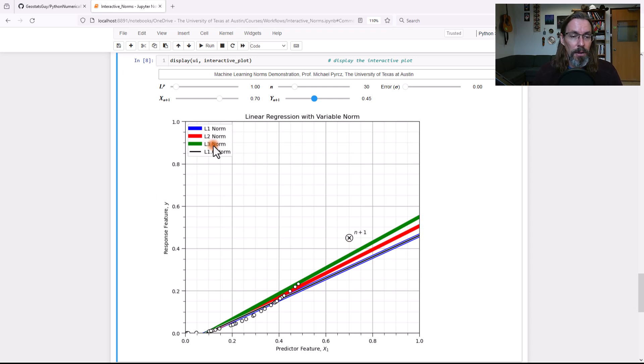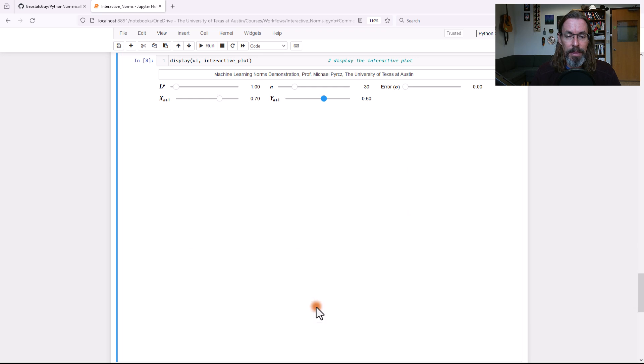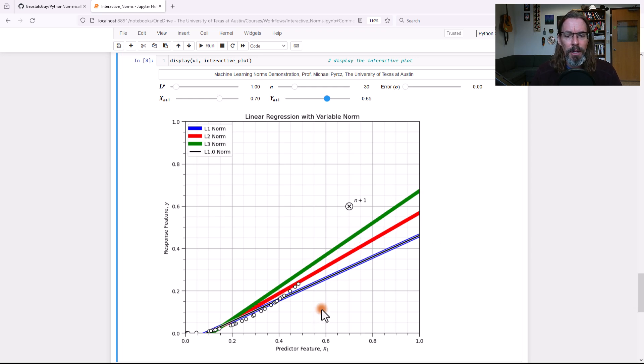The L3 norm for linear regression results in the green line. The L2 results in the red line. And the blue is the L1. You notice our solution is still the L1. It's on top of the blue line. Let's go ahead and keep increasing that.